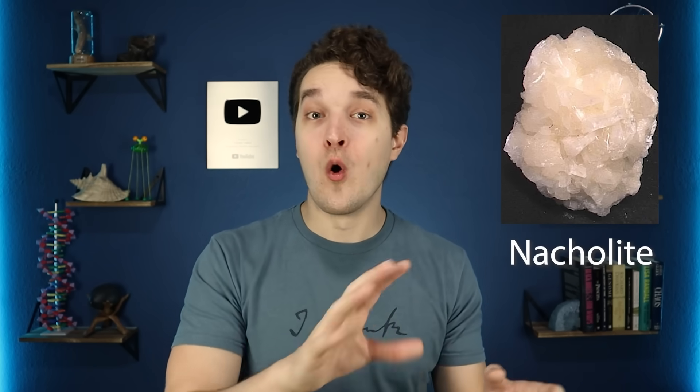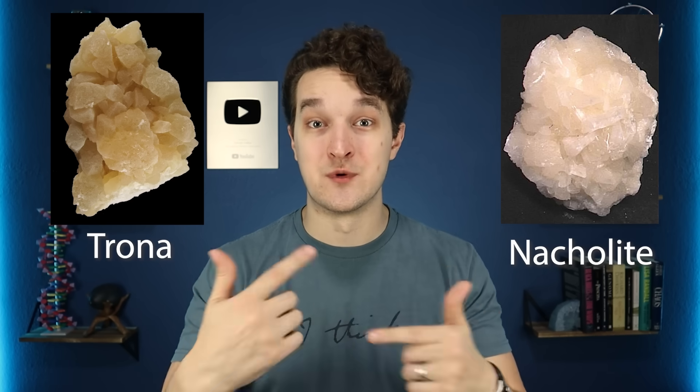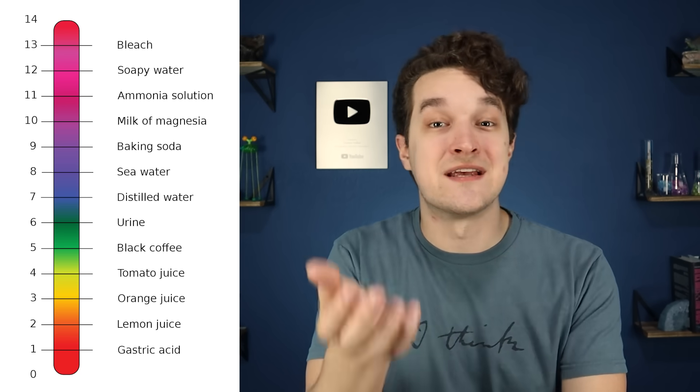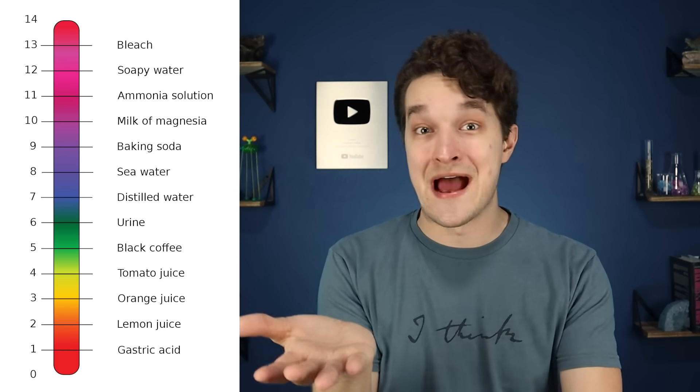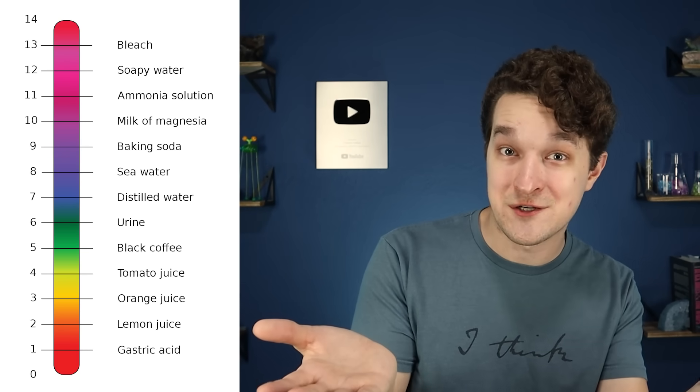Baking soda occurs naturally in an ore called nacolyte, or it can be derived from another ore called trona, which is heated to produce soda ash and then treated with CO2. These are ores — mineral-rich solid matter dug up out of the ground. Most of the baking soda that we have here in the US comes from trona ore mined in the Green River Basin in Wyoming. And just like caustic soda or soda ash, baking soda is a base, which means it has a high pH and will react with acid, which has a low pH.